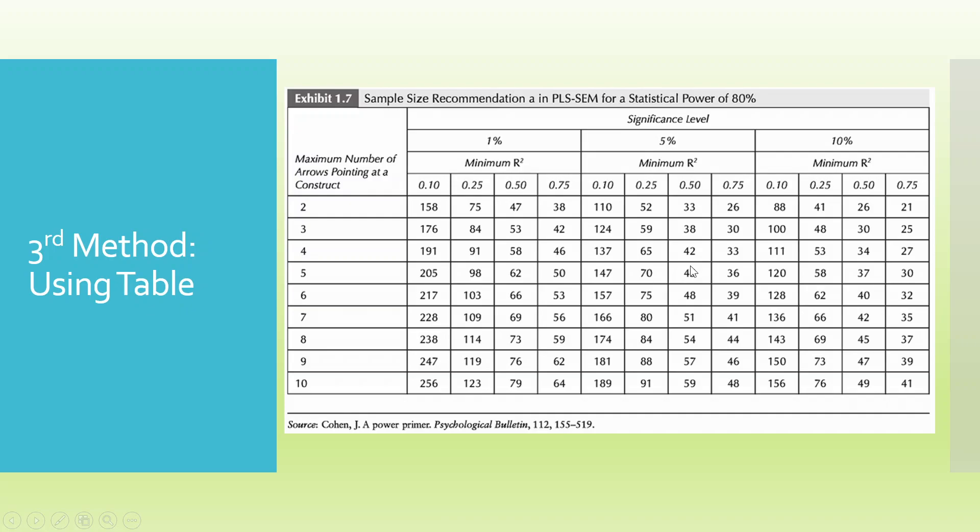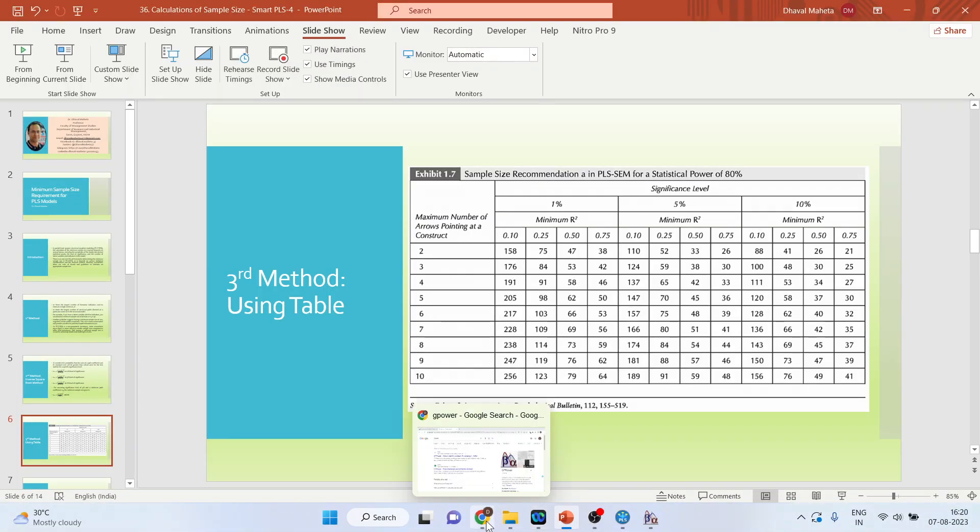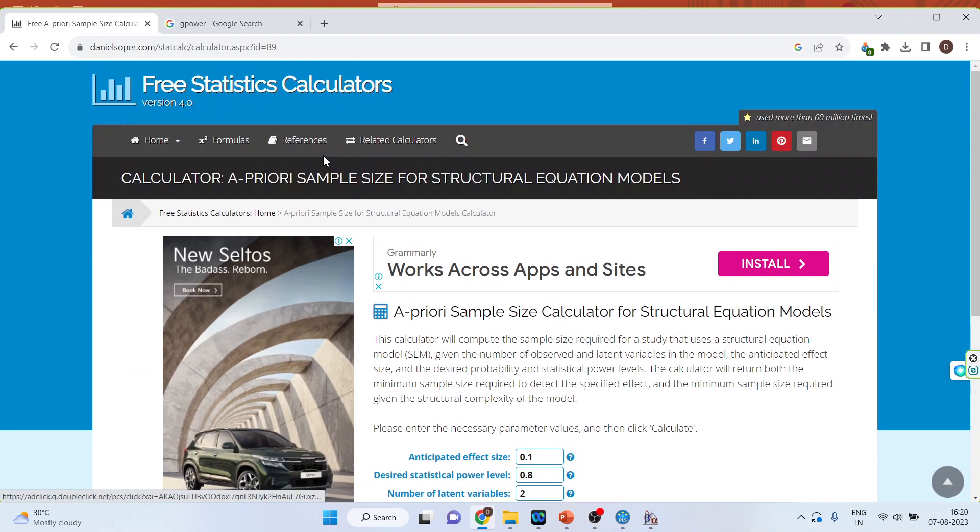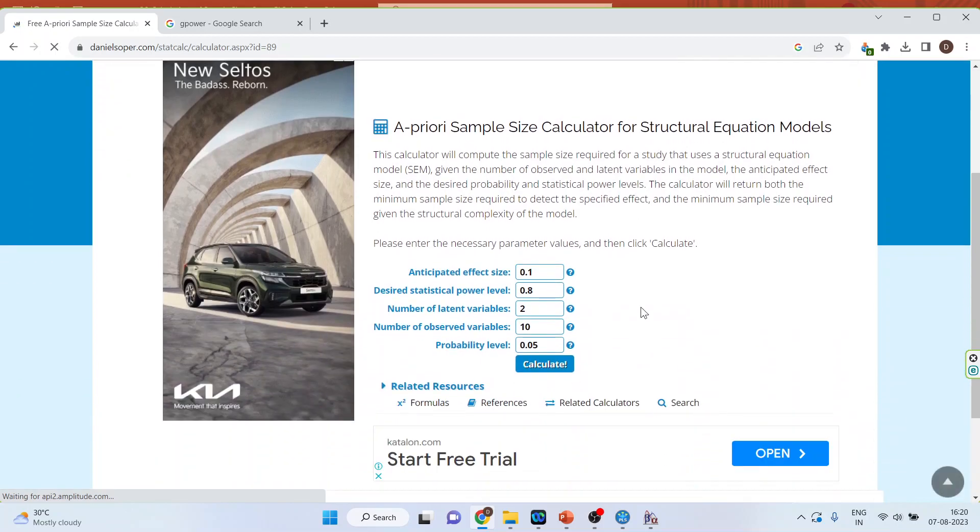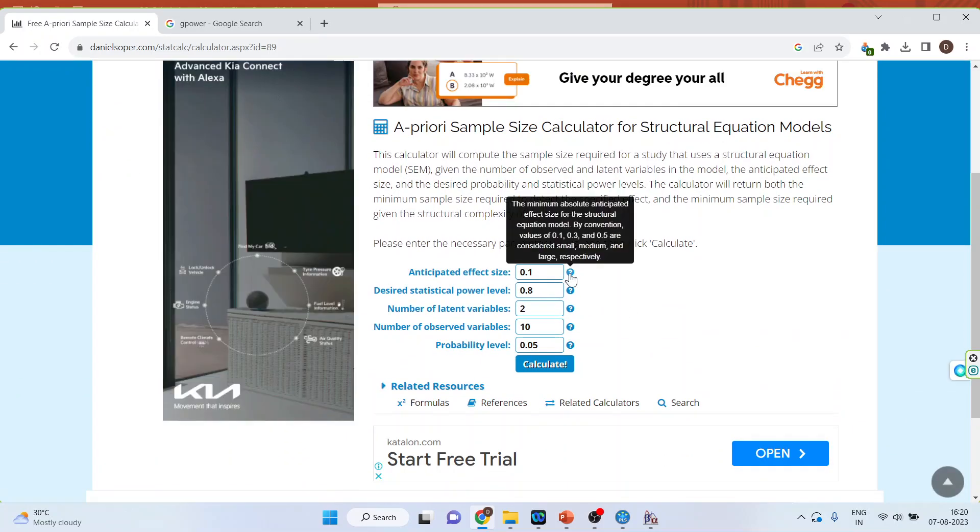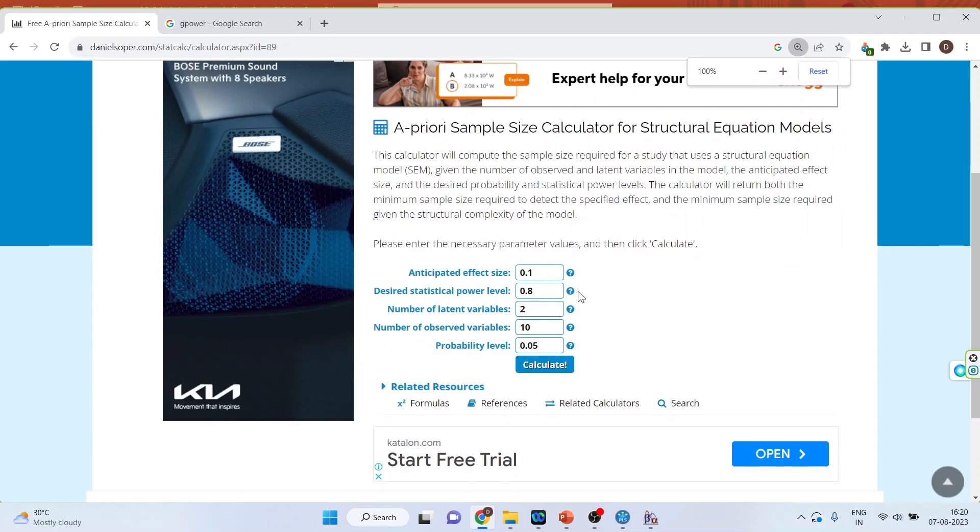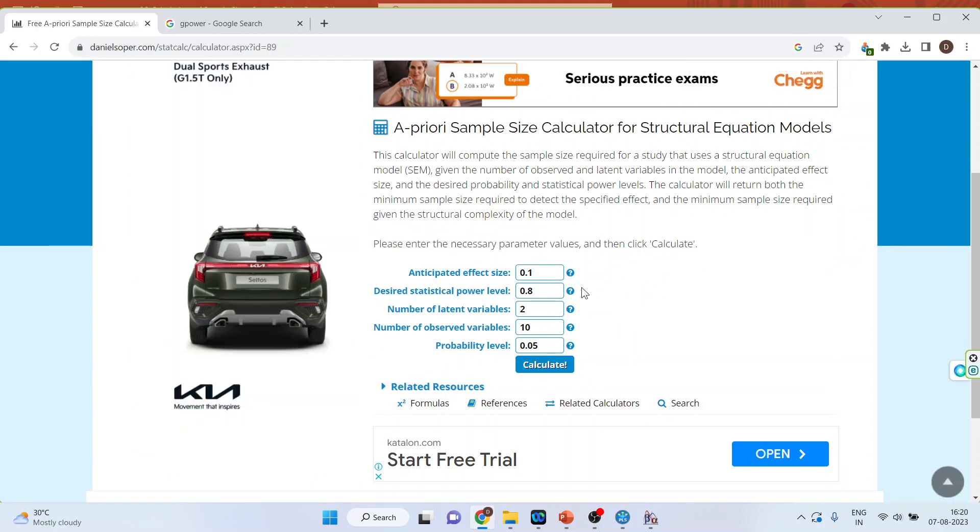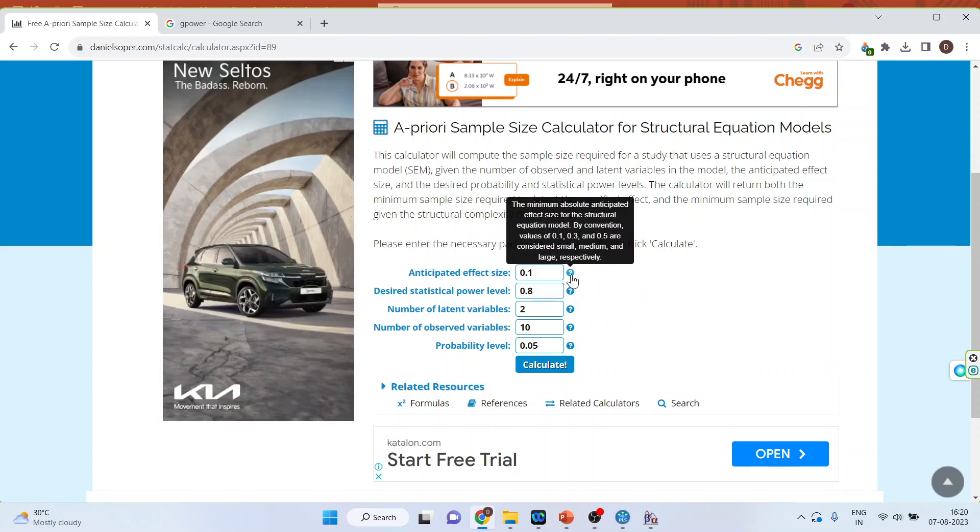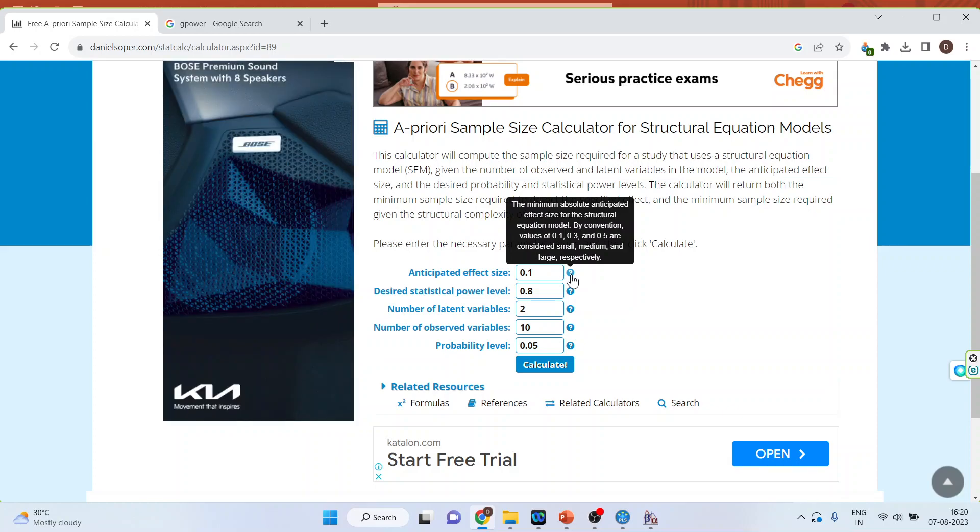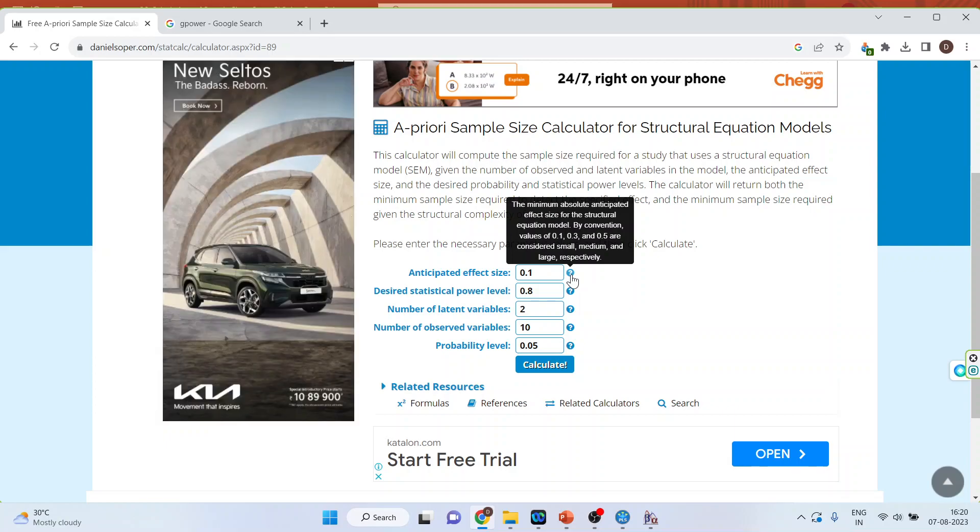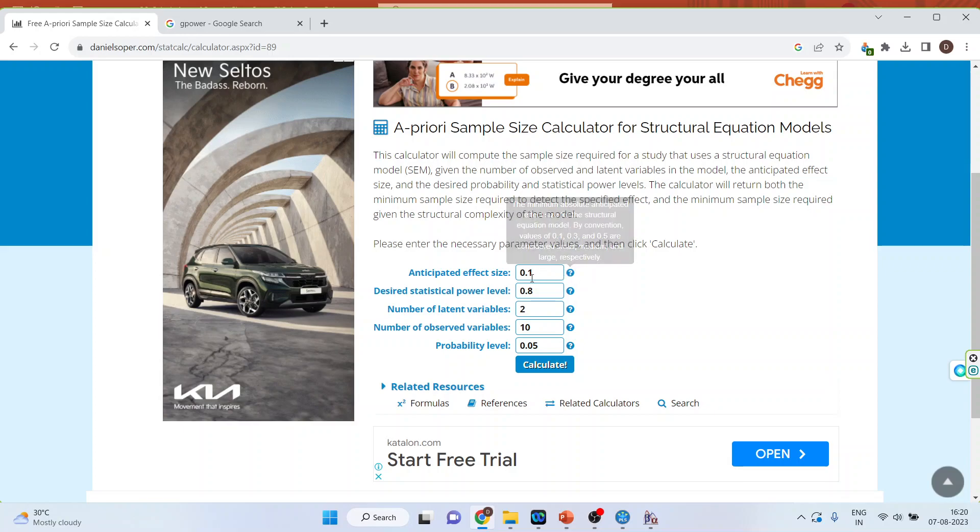Now, the fourth method: that is using the calculator which is given by Daniel Soper. So we will go on the website and we will write down here Daniel Soper sample size calculator. Activate it. Anticipated effect size. So here we have to specify how much effect size I want to consider. By convention, values of 0.1, 0.3, and 0.5 are considered small, medium, and large, respectively. So we will have to specify that how much effect size do I want. Now let's see, I will keep this as 0.1 only.